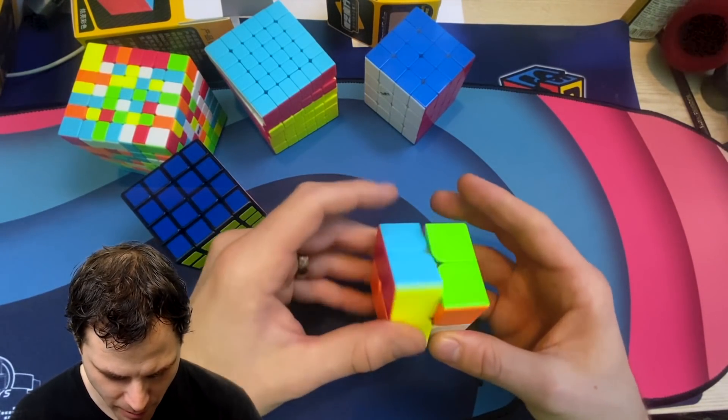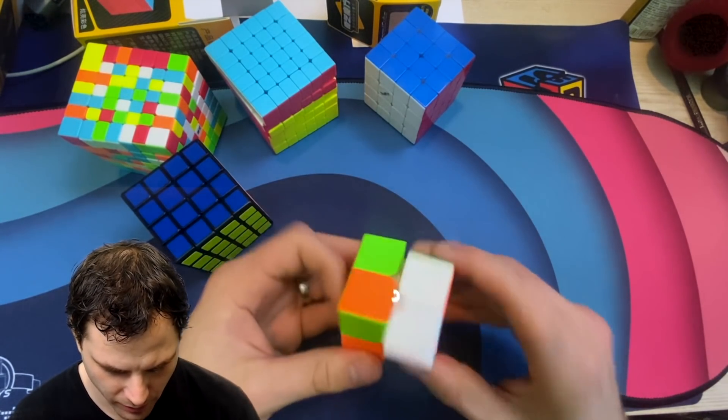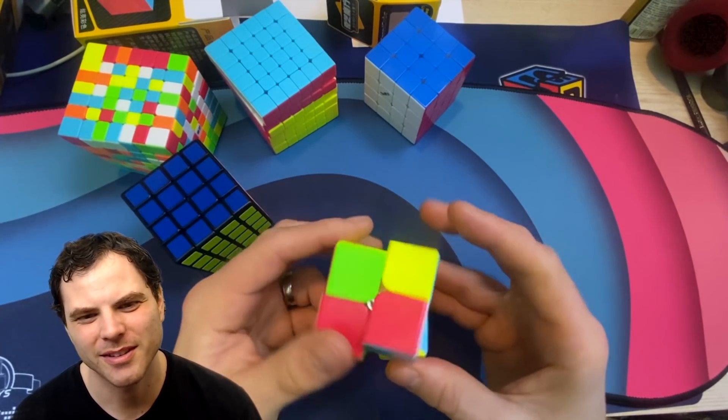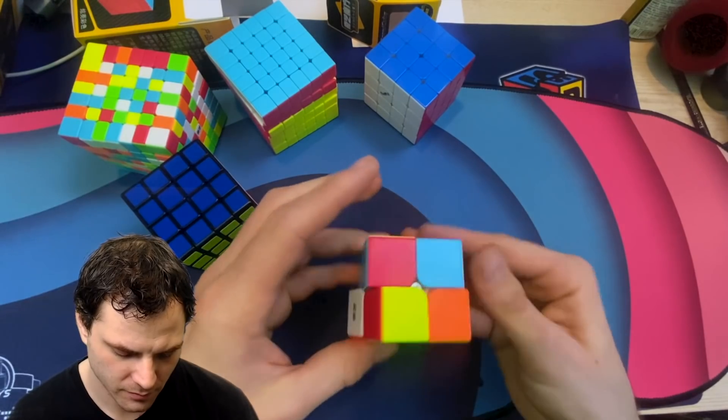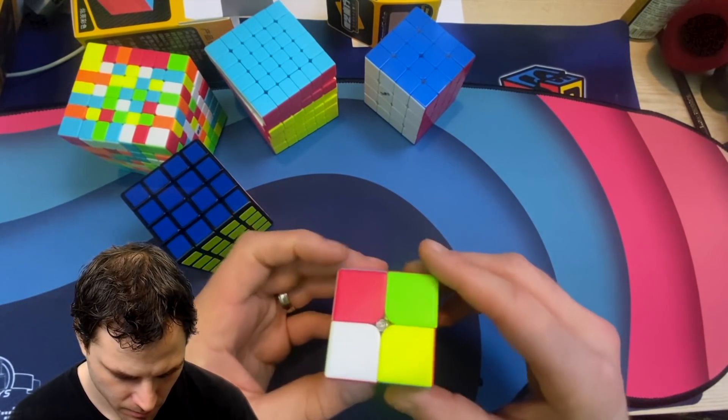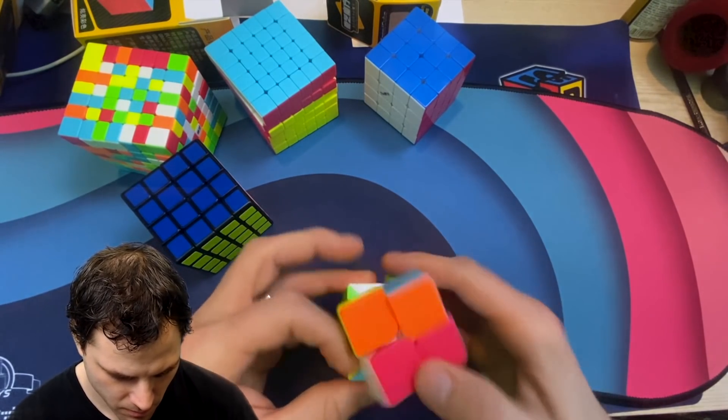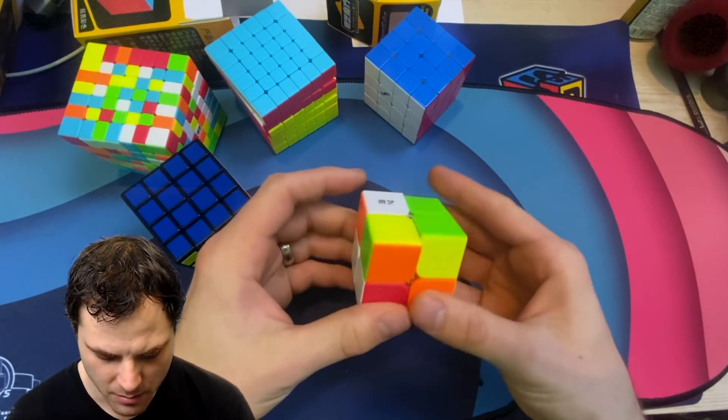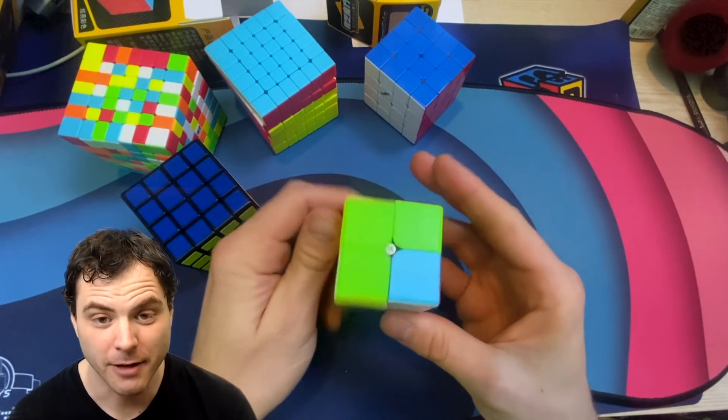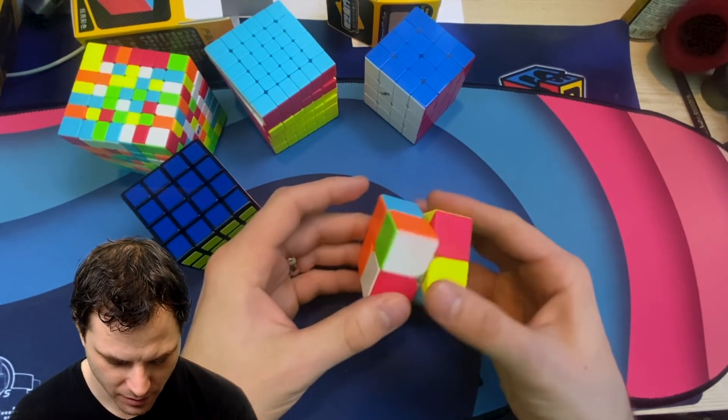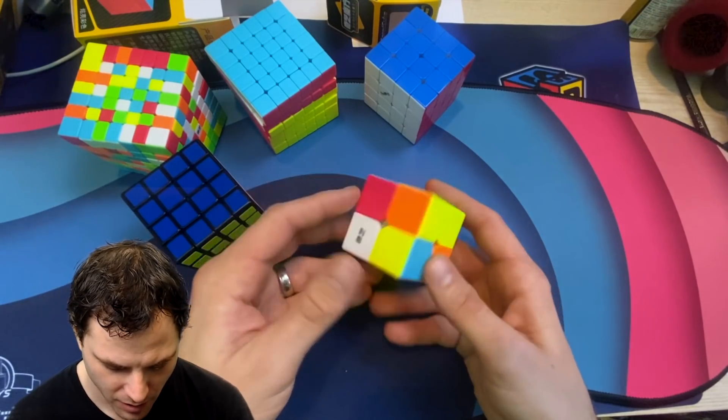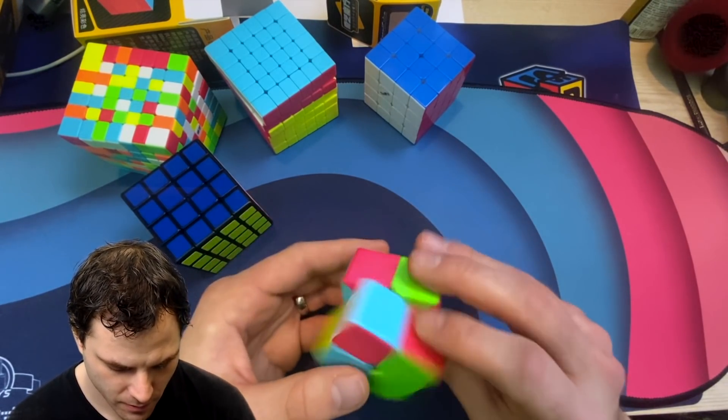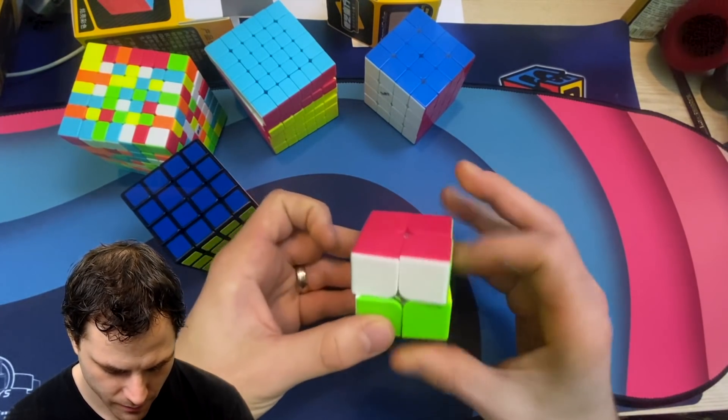When it came out there was a lot of people who were considering just using it as a main over any other one. This one's really tight but it has a similar flow to it. Even at these tight tensions. So let's loosen it just a little bit. Yeah this flows really well. This is something that if somebody just wanted the most budget 2x2 to get into it definitely recommend this one. It just flows. I could probably get similar times on this with practicing it.